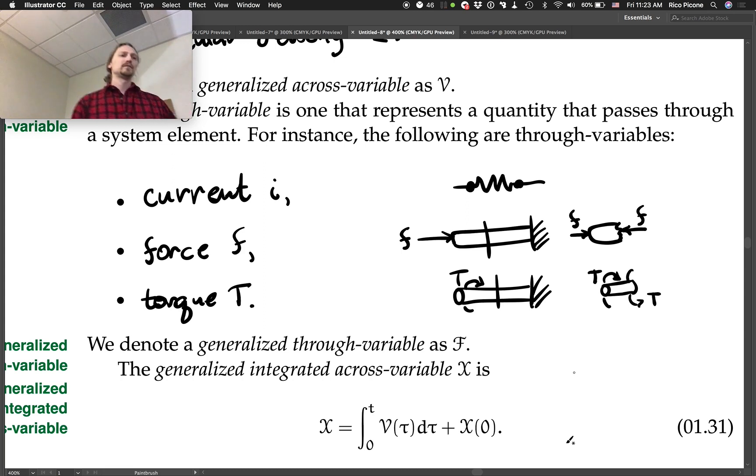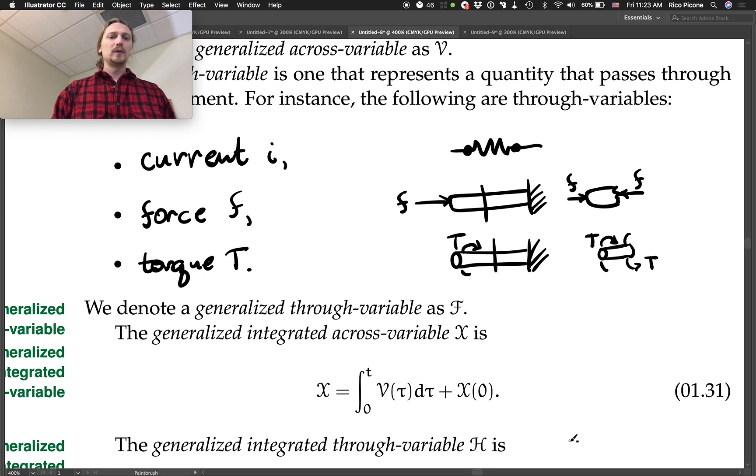I think that covers the through variables. But the idea, once again, is that we're transmitting torque through the element, and that's why it's a through variable. So, we denote a generalized through variable as script F.